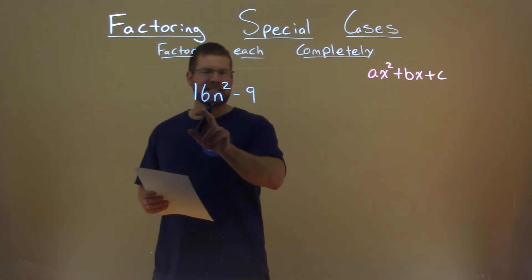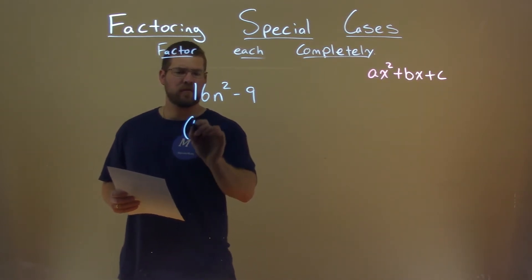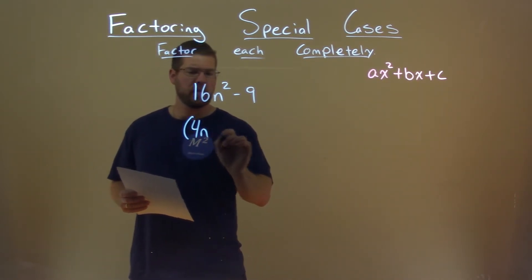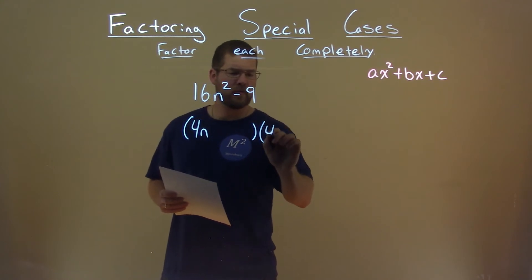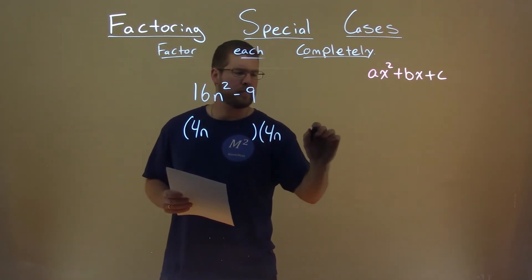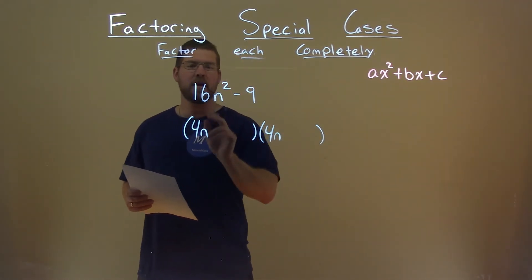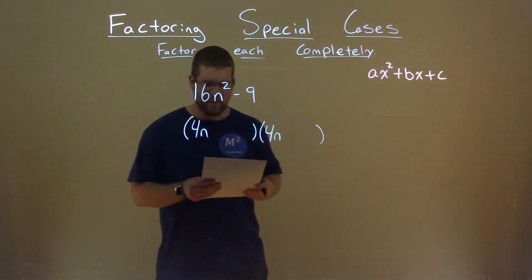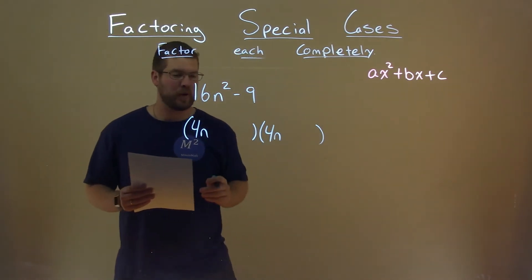We look at 16 — the square root of 16 is 4. So we can see this is going to be some case of 4n times 4n, which gives me 16n squared.